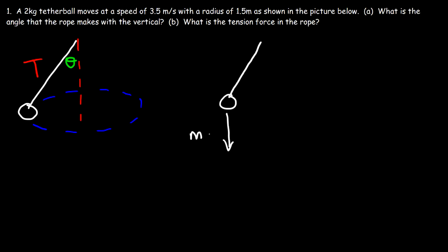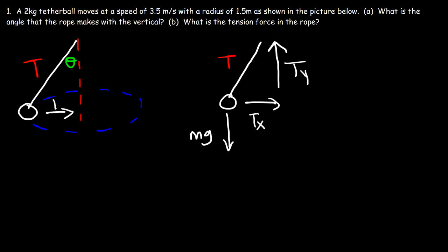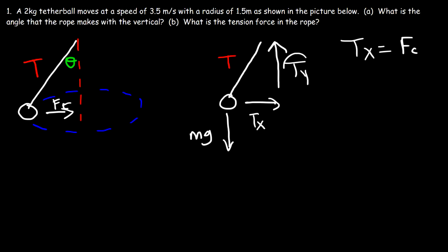The tension force has an x-component Tx and a y-component Ty. In this example, what provides the centripetal force? The centripetal force is the force that keeps the ball pointing towards the circle, so Tx provides the centripetal force. We can say Tx is equal to Fc, and Ty supports the weight force, so Ty is equal to mg.